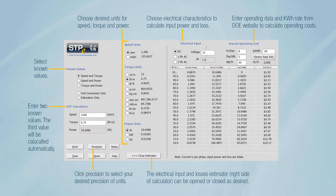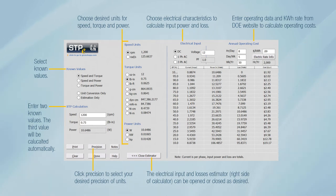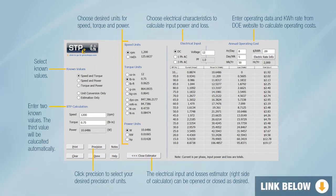For more detailed calculations, we have a free downloadable desktop version that expands it into estimates for electrical input losses and annual operating costs. We've included the links to the STP online and desktop calculators below.